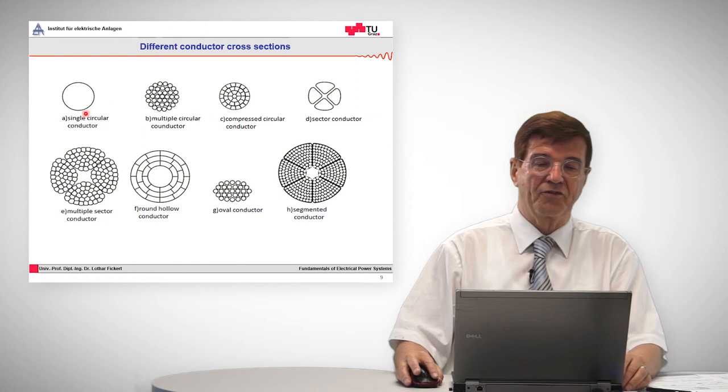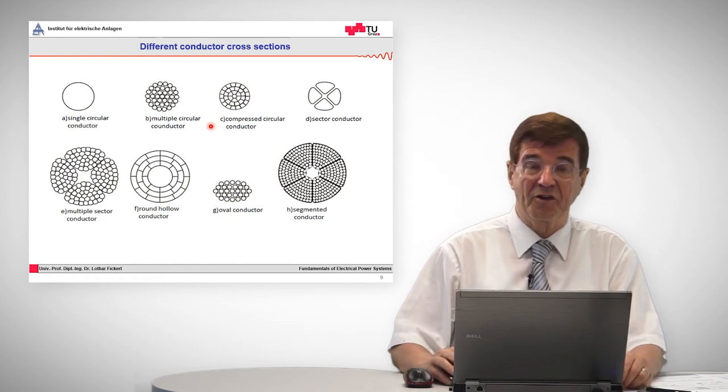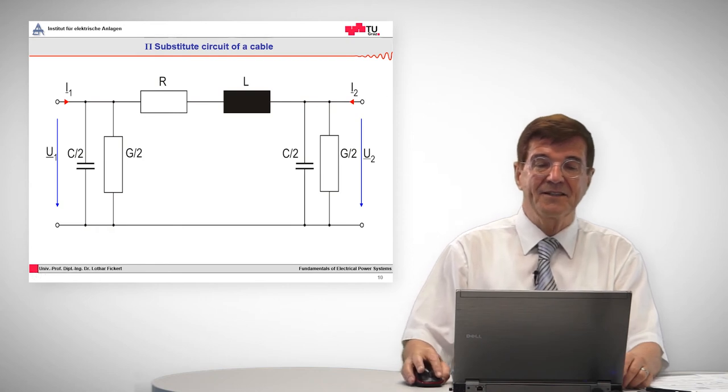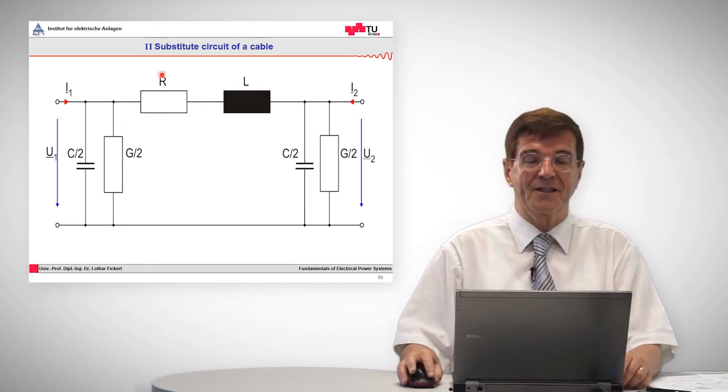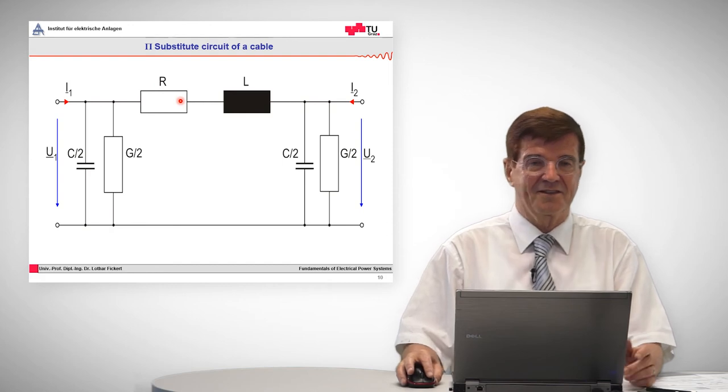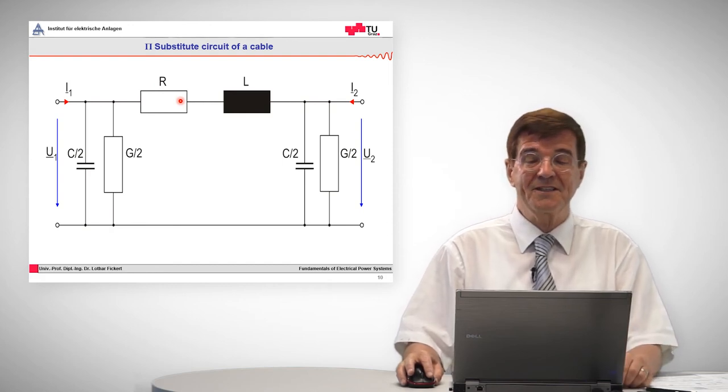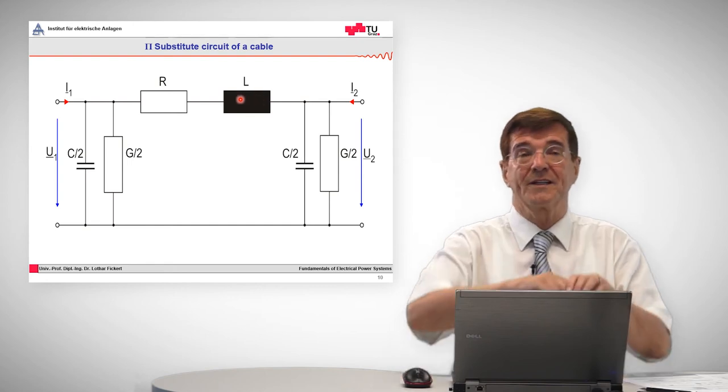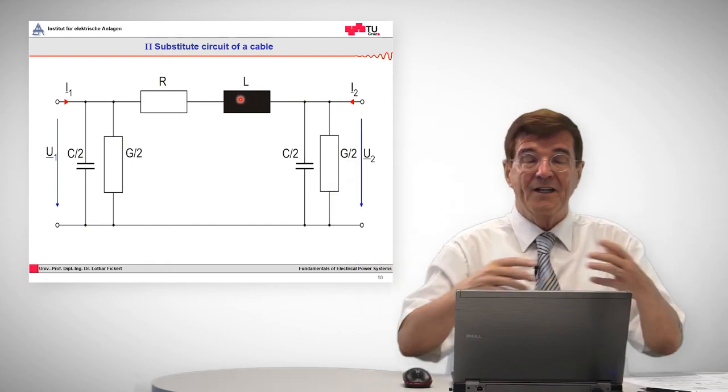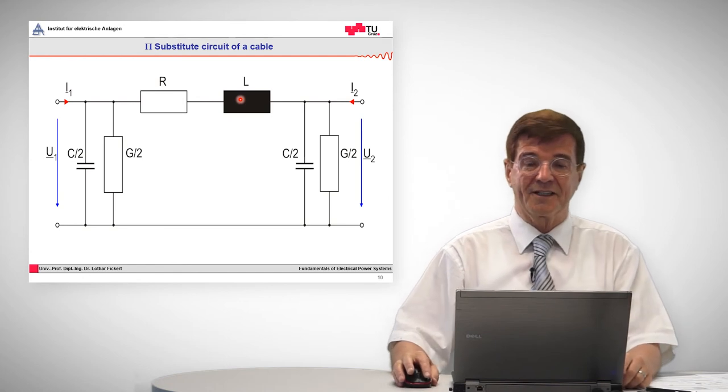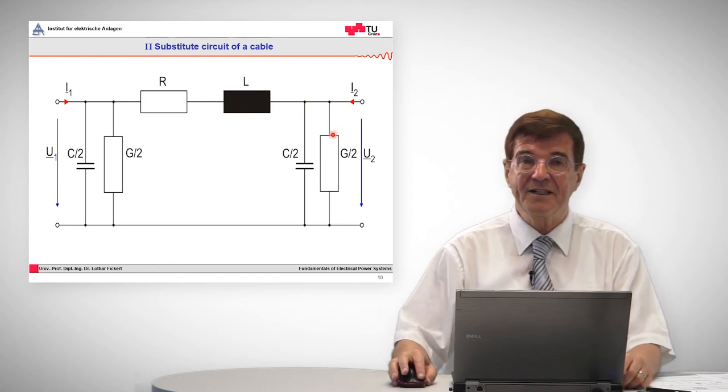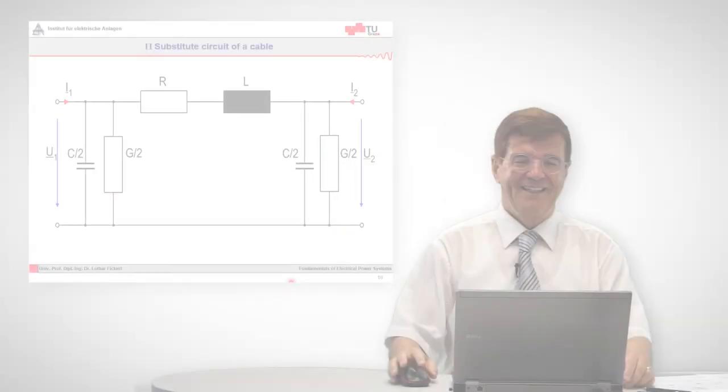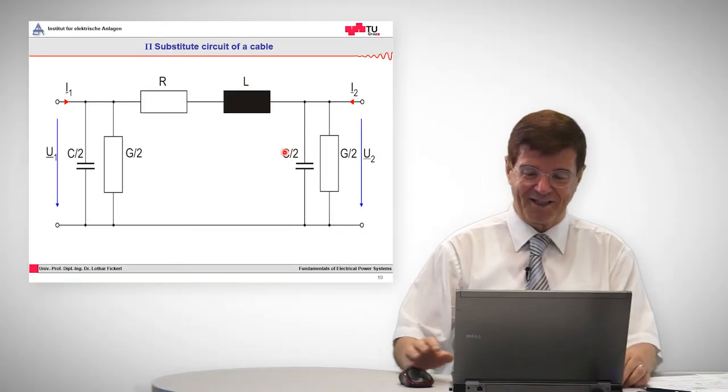These are the different cross sections, and this is the representative substitute circuit of a cable. A cable has a resistance that is the copper resistance or the aluminum resistance. Then it has an inductance because each loop, and the cable forms a loop, can be assigned to an inductance. Then we have some leakage resistances, for example bad insulation pieces, and then we have the capacities of the cables.